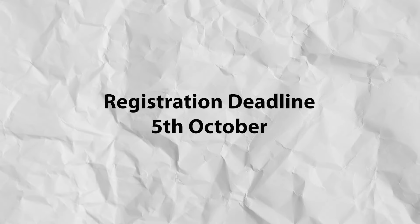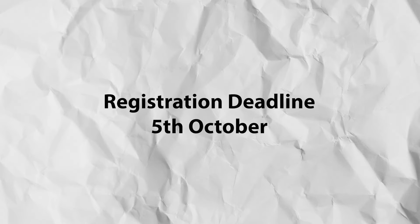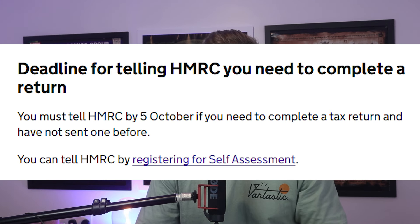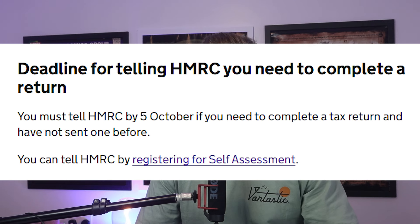Our first deadline is the registration deadline, which falls on the 5th of October that follows the tax year you need to register for. This means if I had income that I started receiving in December 2023 that needs to be reported, that would fall into the 23-24 tax year and I would need to register for self-assessment by the 5th of October 2024 to ensure that I met the deadline.